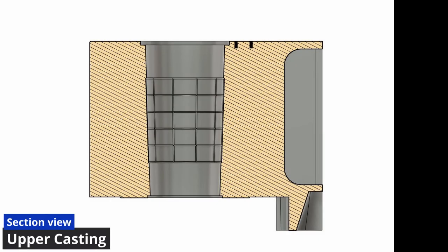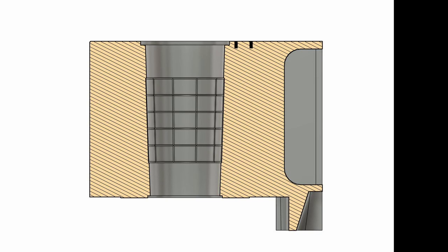Looking at the section view of the upper casting, you can see the internal tapered bore which will be connected to the tapered face of the rudder stock forming a conical coupling. Notice that these castings are made in such a way with flat faces to allow the arms and webs to be welded to them.